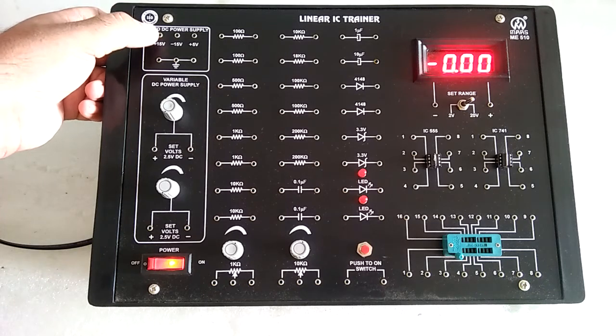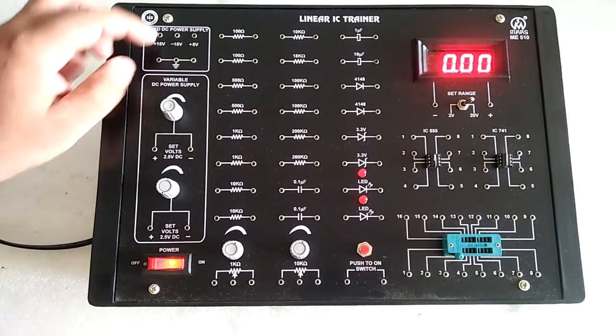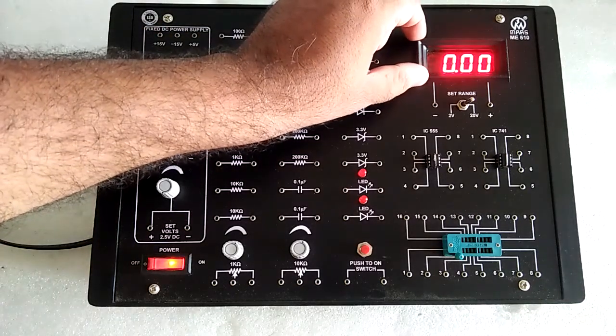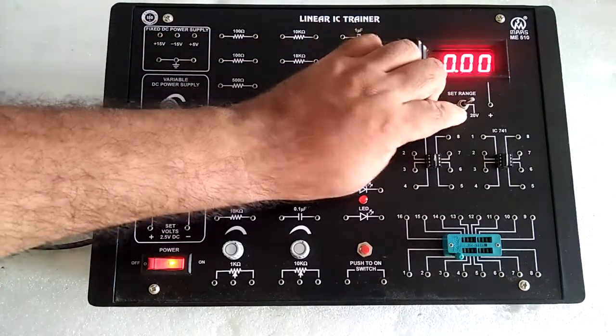Fixed power supply: +15V, -15V, and +5V with respect to ground. Here we have the digital dual-range meter with 2V range and 20V range DC.